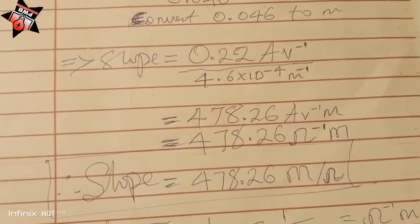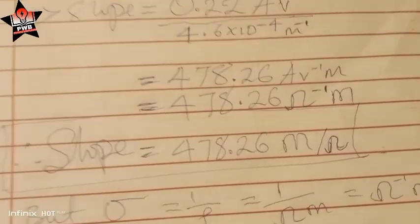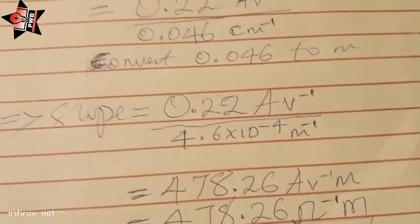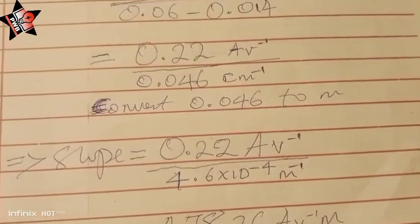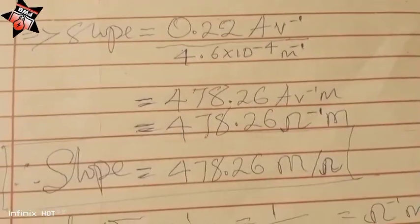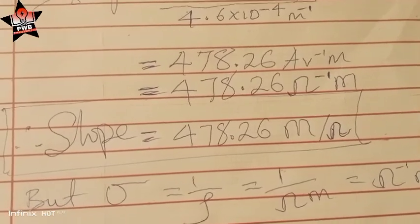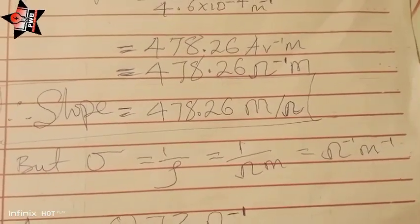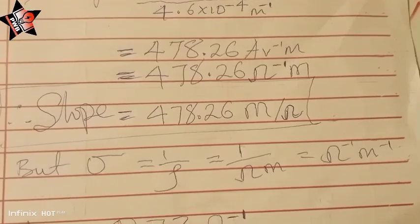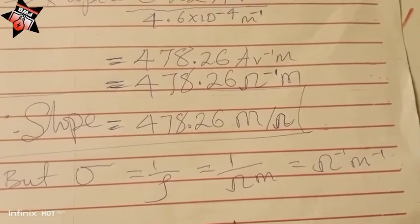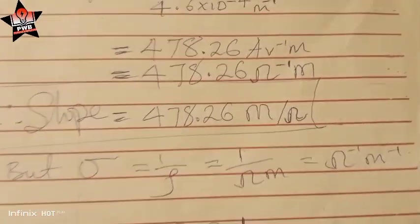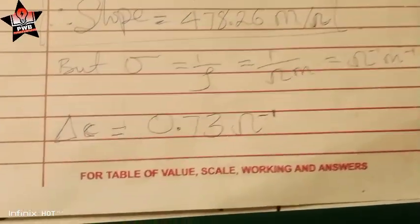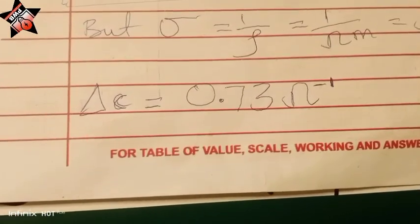The units of the slope work out to be Ω⁻¹·m (ohm inverse dot meter), after converting centimetres to metres. This means the slope resembles the electrical conductivity of the material, and the intercept was 0.73 per ohm.